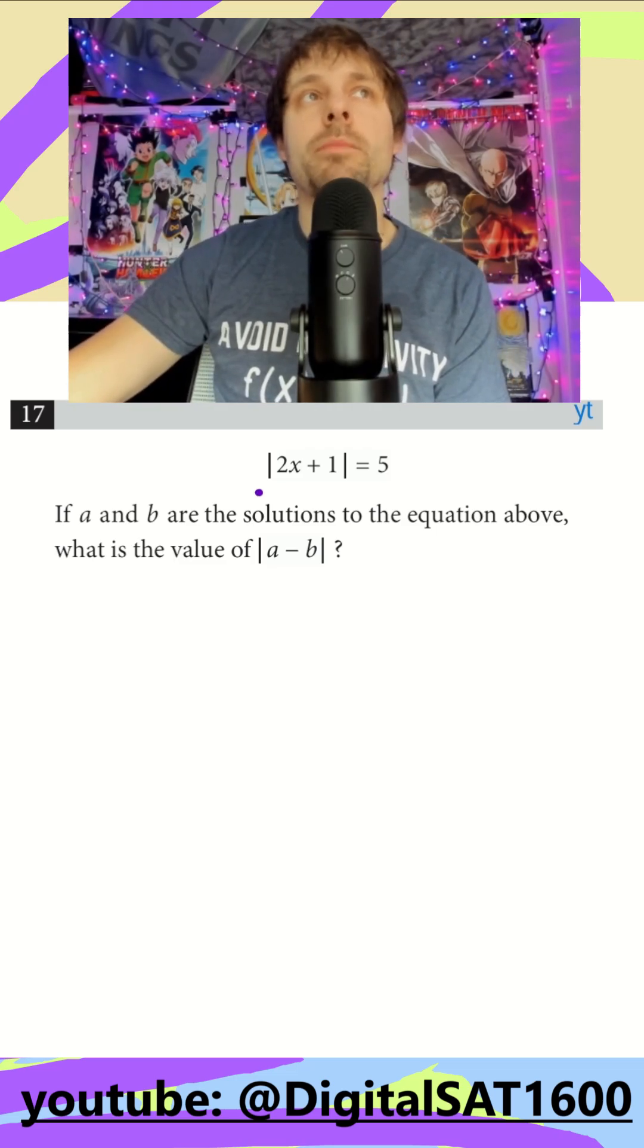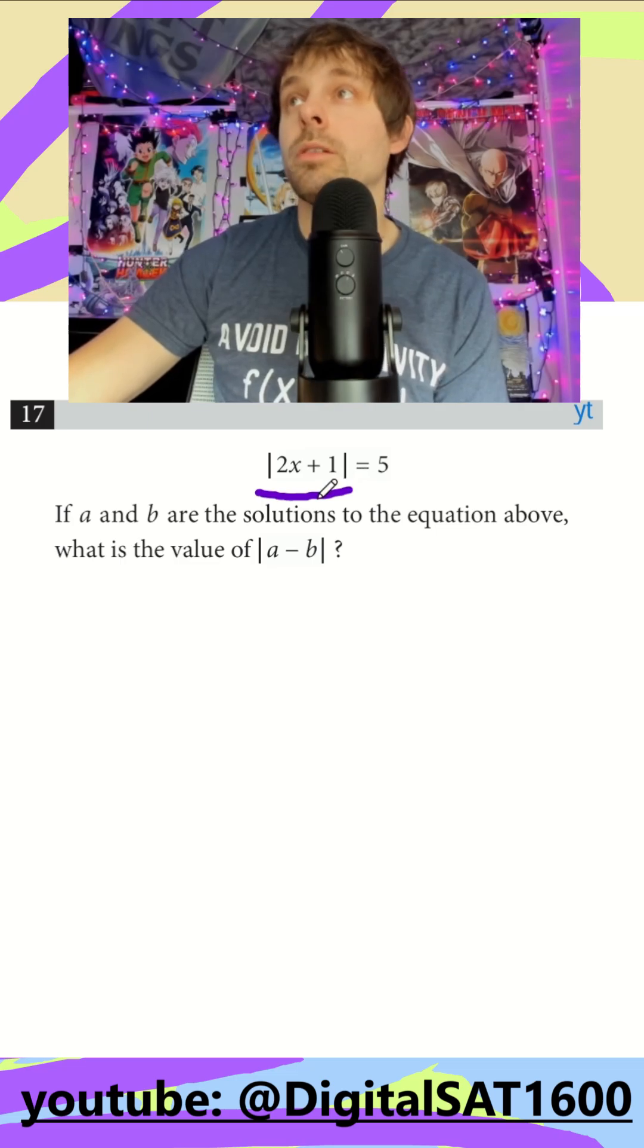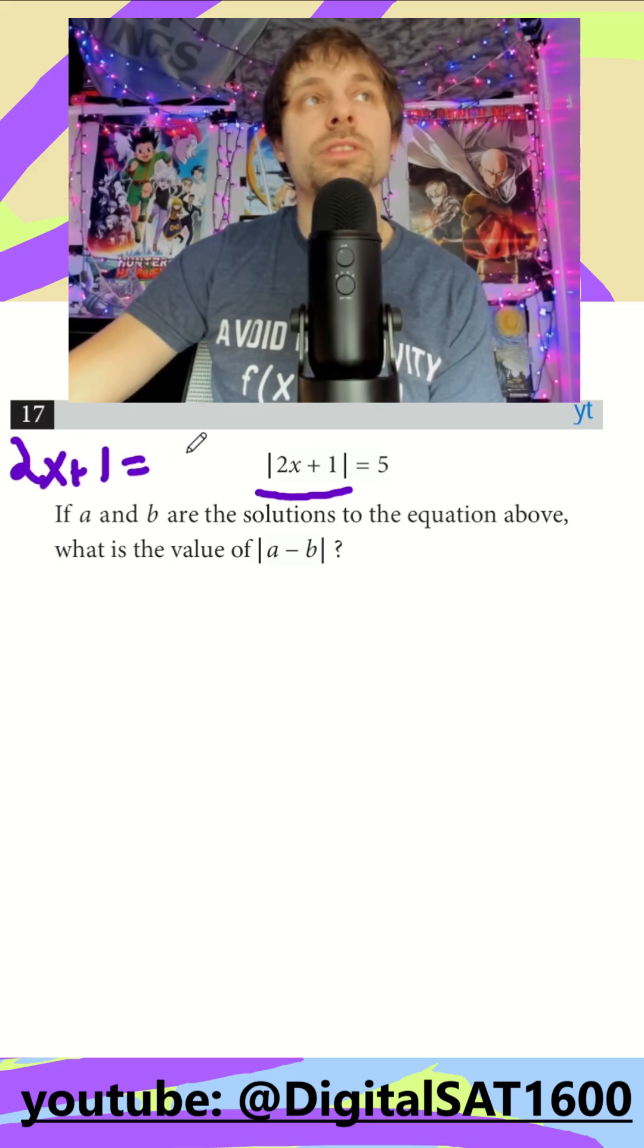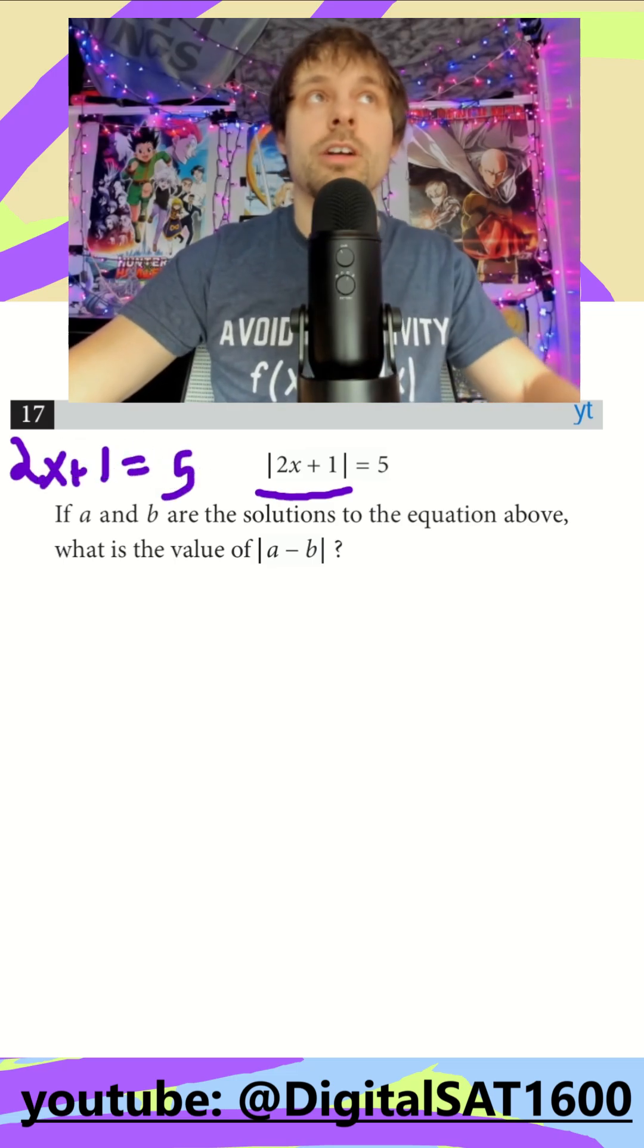So to break apart these absolute value bars, we're going to create two equations that are really similar to the first one. Our first equation is going to be 2x plus 1 is equal to 5 exactly, just without our absolute value bars.